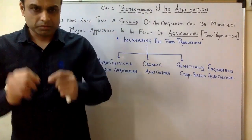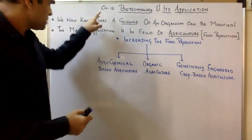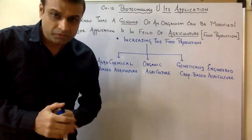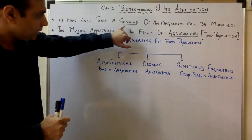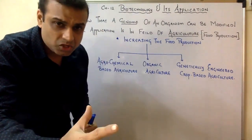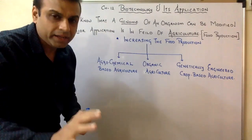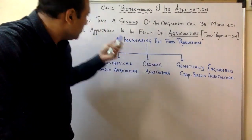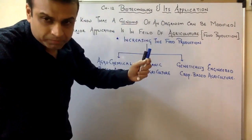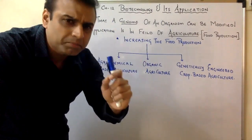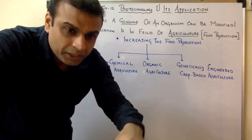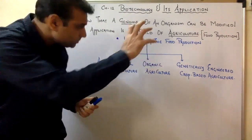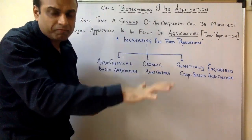Good evening, kids. Today we will be starting with our next chapter, that is Chapter 12: Biotechnology and its Applications. If you recollect from the previous chapter, we studied that you can actually modify the genome of any organism by either adding a gene, deleting a gene, or by manipulating a gene. For example, we took the example of addition of the insulin gene into an E. coli cell, through which we started producing human insulin.